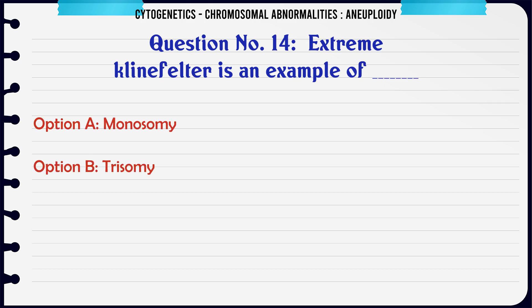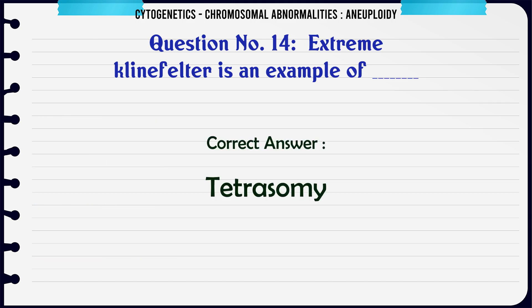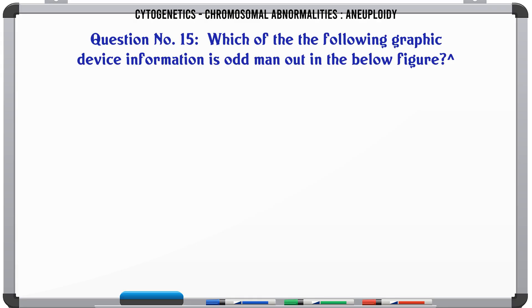Extreme Klinefelter is an example of: a. Monosomy, b. Trisomy, c. Dysomy, d. Tetrasomy. The correct answer is Tetrasomy.